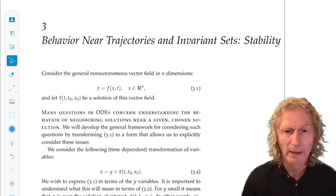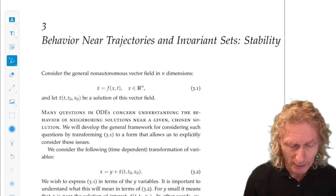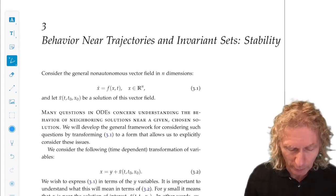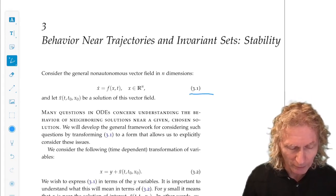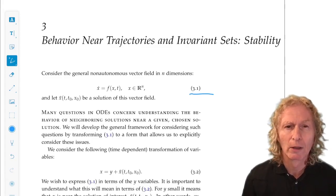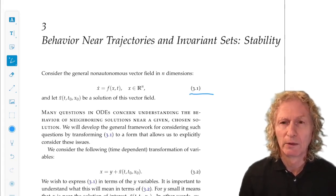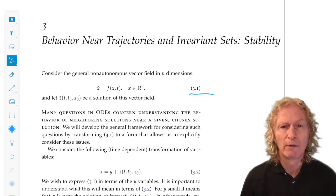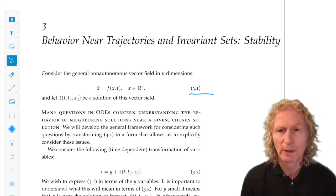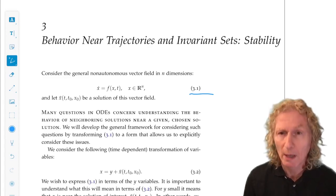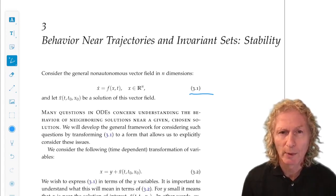So we start with a general ODE, autonomous or non-autonomous. We write it down as non-autonomous. And let x̄(t, t₀, x₀) denote a specific solution of this ODE. What we're interested in is the behavior of nearby solutions. Now we've got to make that precise.